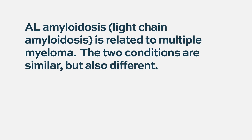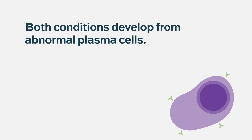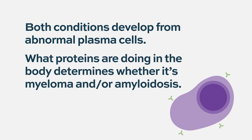For light chain amyloidosis that's related to multiple myeloma, I almost think of them as on the same spectrum — they're almost cousins. They're related, but they're different. In both light chain amyloidosis and multiple myeloma, you have sick plasma cells in the bone marrow. Those plasma cells are growing too much and synthesizing this abnormal protein, usually a light chain protein circulating in the blood. But depending on what the cells and the protein are doing in the body, that determines whether it's multiple myeloma and/or amyloidosis.